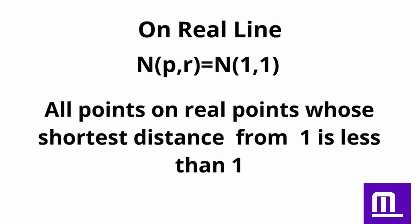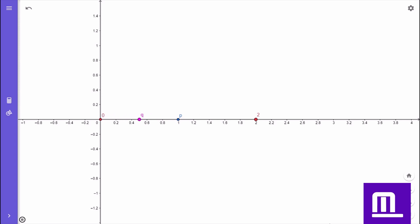Now, let's take a neighborhood of one of radius one on the real line. So, n of one comma one is a set which contains all the points on the real line whose shortest distance from one is less than one. Yes, it contains all the points between zero and two.